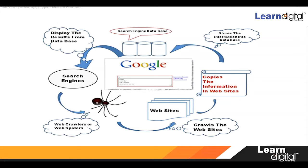In this section we'll come to know how a search engine actually works. Any search engine like Google, Yahoo, Bing, or Amazon — wherever you type any keyword — these search engines have their own crawlers, also called search engine bots or spiders. This is a kind of robotic software.